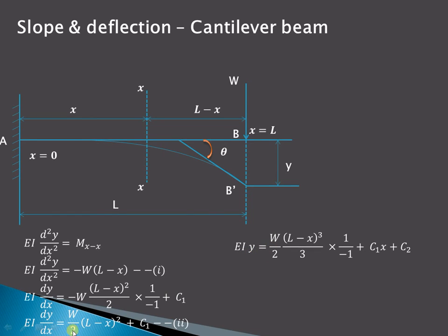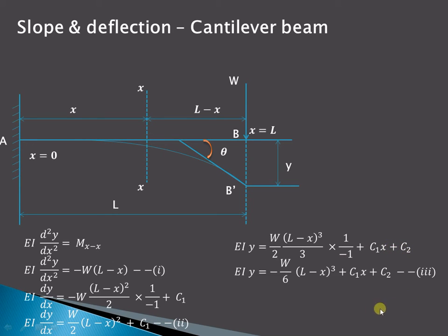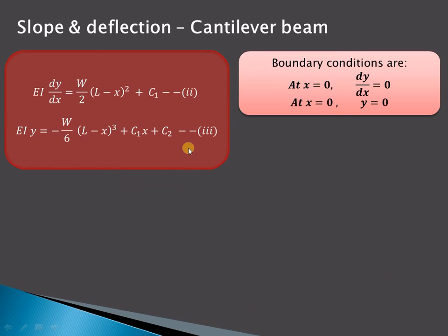Again integrating with respect to x: EI y equals W/2 times the integral of (L minus x)², which gives (L minus x)³ divided by 3, again divided by the coefficient of x that is minus 1, plus C1·x plus a constant of integration C2. This simplifies to minus W/6 times (L minus x)³ plus C1·x plus C2 as our third equation.